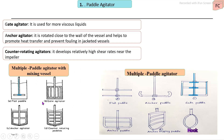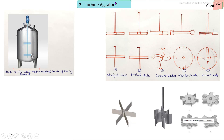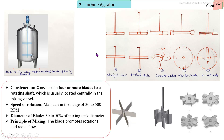The second mixing element is the turbine agitator, in which the mixing shaft is connected with four or more blades. It is located at the center of the mixing vessel. The main diameter of the turbine agitator is 30 to 50% of the tank diameter, with a rotation speed of 30 to 500 RPM. It is mostly used for low or medium viscosity liquids. Main types include straight blade, pitched blade, curved type, and flat disc with blades.